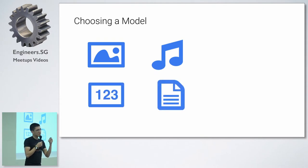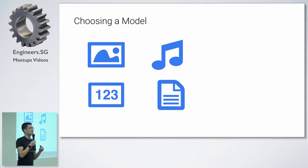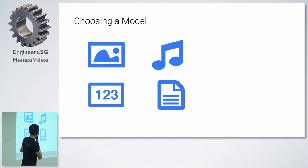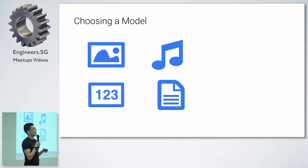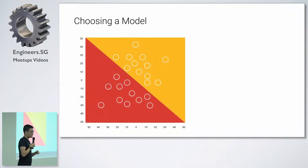That brings us to our third step: we've gathered our data, we've prepared our data, and now we have to choose what kind of model to run. This is a meta step because you end up playing around with what you use — it's not a final decision you make upfront. There are models particularly well-suited for images, some better for music or sound, some more developed for text, and some geared toward structured data — your standard CSV or spreadsheet data. You take your model, run it through, and see how it does.